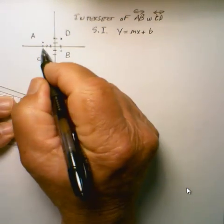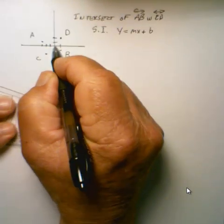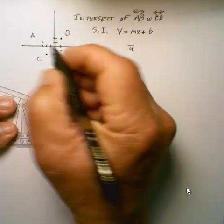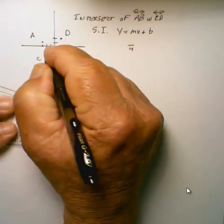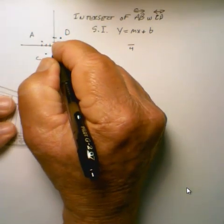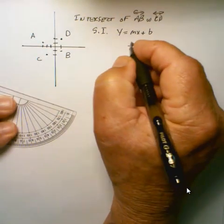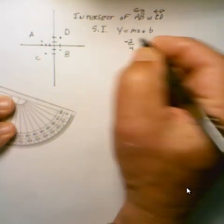We know that the slope, the run is 1, 2, 3, 4, and the rise is actually a fall. It's going from Y is 1 to 0 and 1, so the fall is 2, and it's a fall.